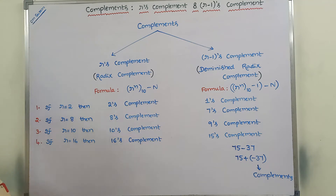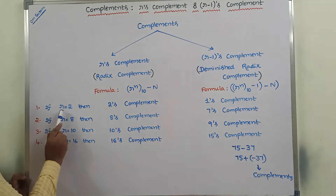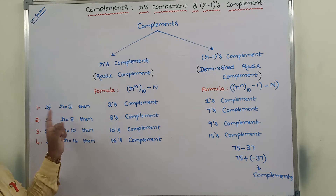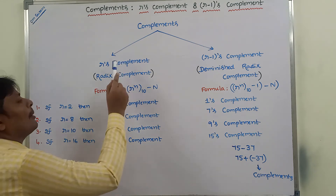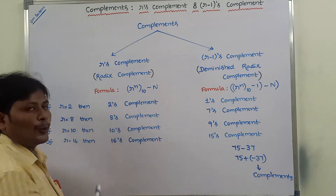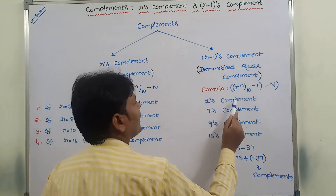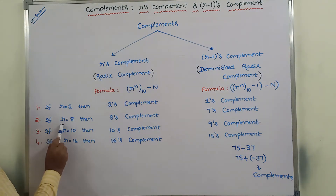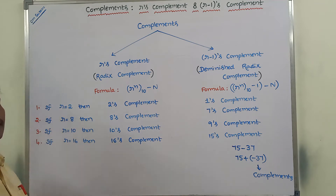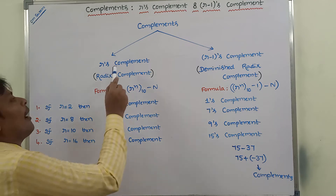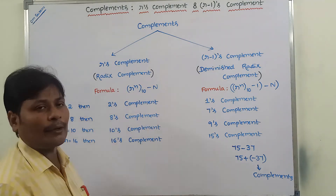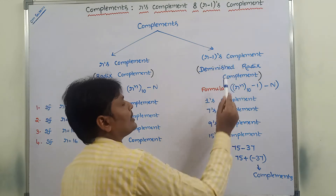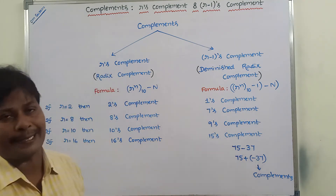Now, suppose if R value is equal to 2, that means base or radix value is equal to 2, then R's complement can be called as 2's complement, and R-1's complement can be called as 1's complement. If R is equal to 8, that means base or radix is equal to 8, then R's complement is called 8's complement.